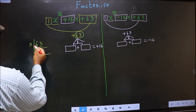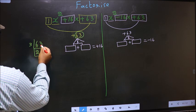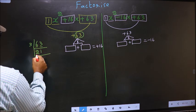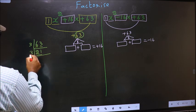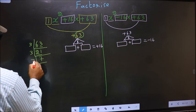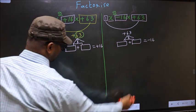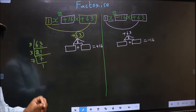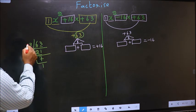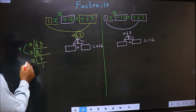The first number is 6. When do we get 6 in the 3 times table? 3 twos are 6. The other number is 3. When do we get 3 in the 3 times table? 3 ones are 3. Now here 21: 3 sevens are 21. Now 7 is a prime number, so 7 ones are 7. The two numbers should be 3 into 3, which is 9, and the second number is 7.